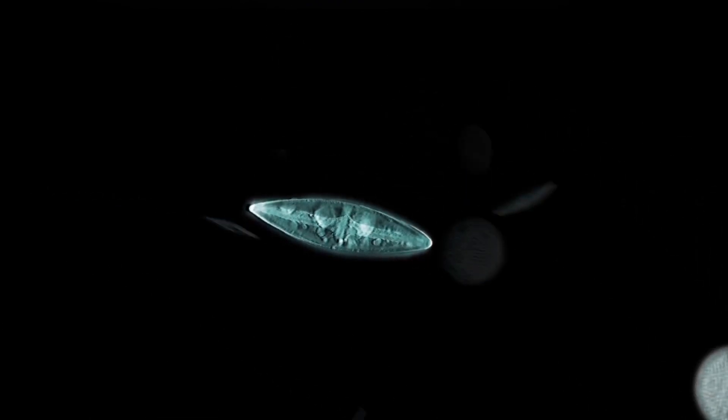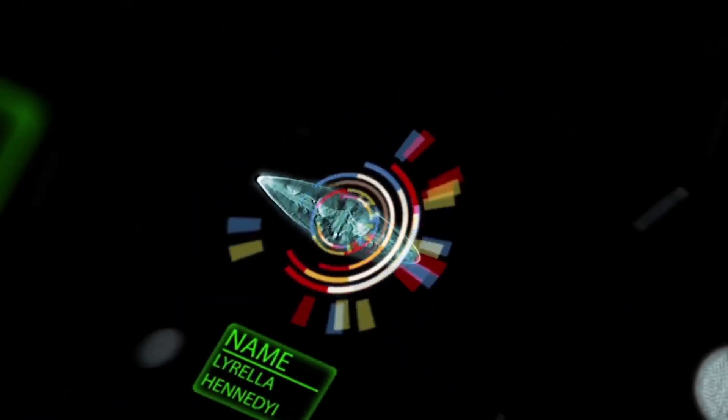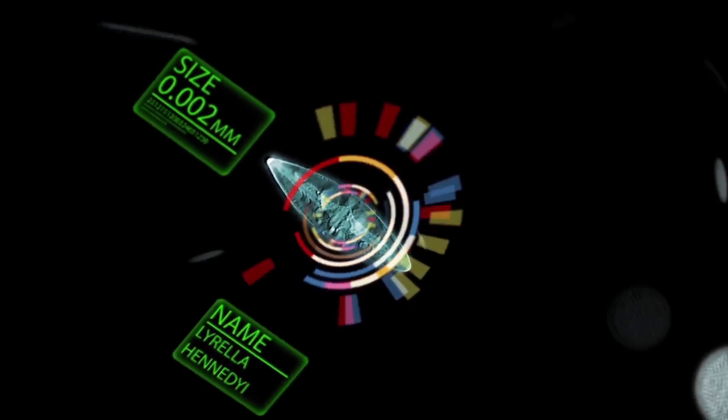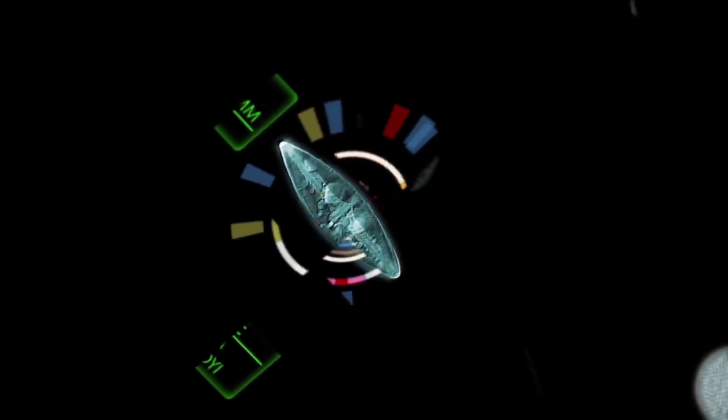Diatoms are commonly between 20 to 200 microns, that's 0.02 to 0.2 millimetres in diameter or length, although rarely they can be up to 2 millimetres long.